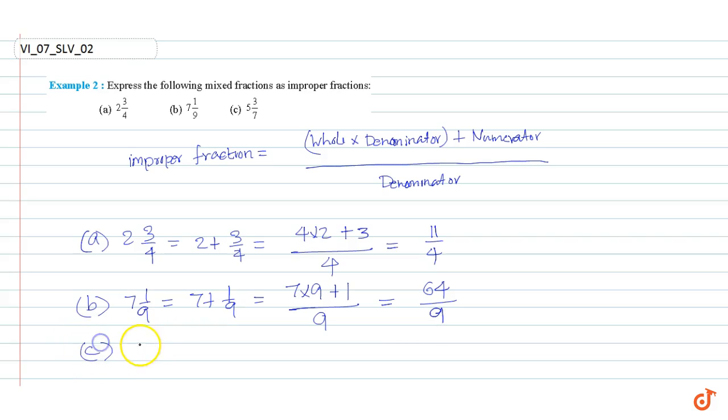Part C: 5 and 3/7, this is equal to 5 plus 3/7, this is equal to (5 times 7 plus 3) divided by 7, which is equal to 38/7. These are our answers.